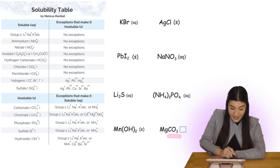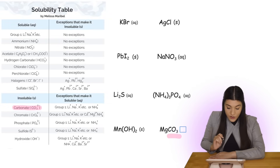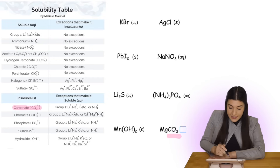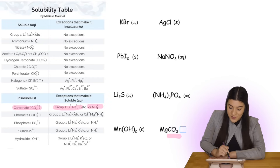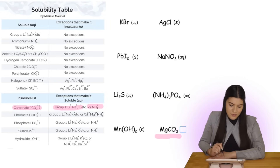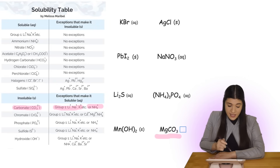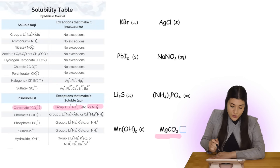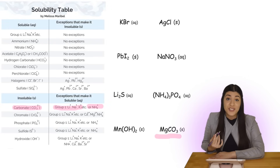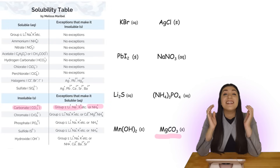We have carbonate, or CO3. That's typically insoluble with the exception of Group 1 metals and ammonium. But magnesium does not fall under any of these exceptions, so we know it's going to be a solid or insoluble.